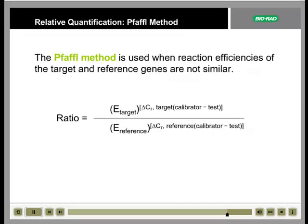The Pfaffl method uses the following equation to determine the expression ratio between the test and calibrator samples. E-target and E-reference are the reaction efficiencies of the target gene and reference gene, respectively. This equation assumes that each gene has the same amplification efficiency in the test and calibrator samples.